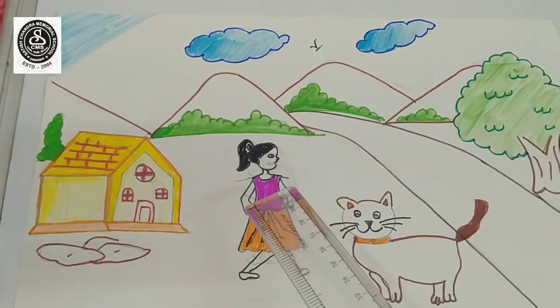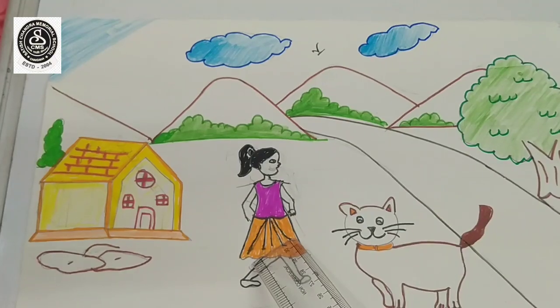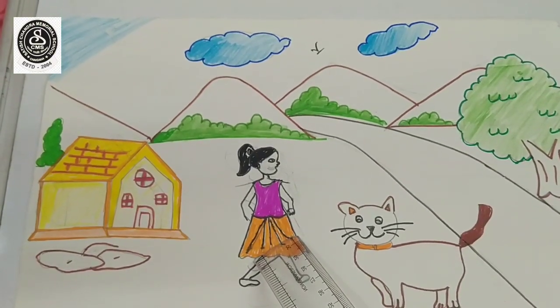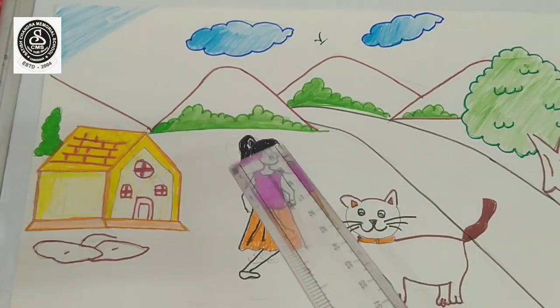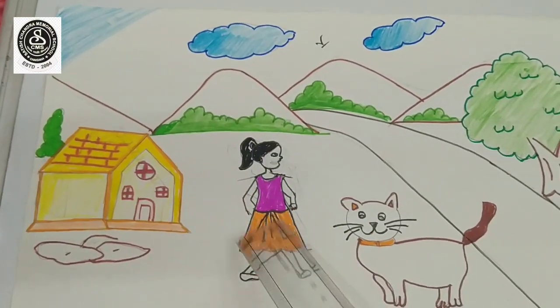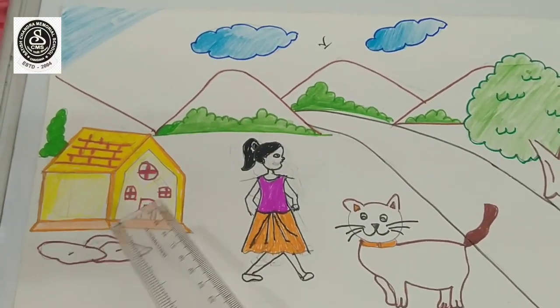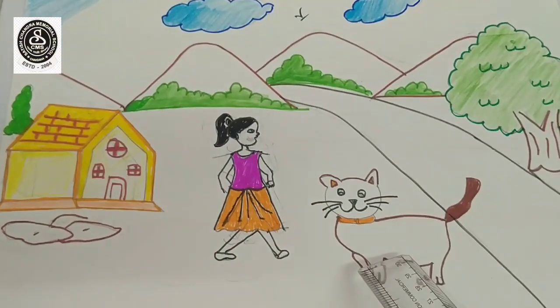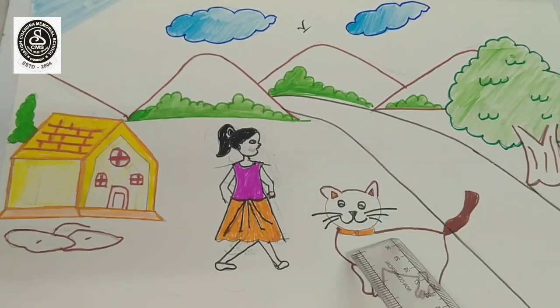Can you tell me the girl is standing where? Yes, you are right. The girl is standing after the house. Okay. And the cat is standing after the girl.